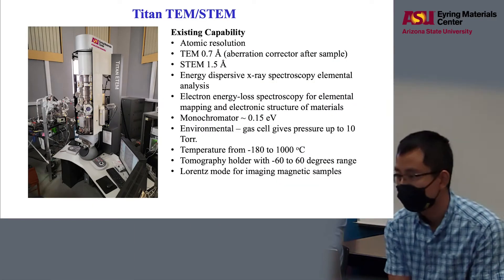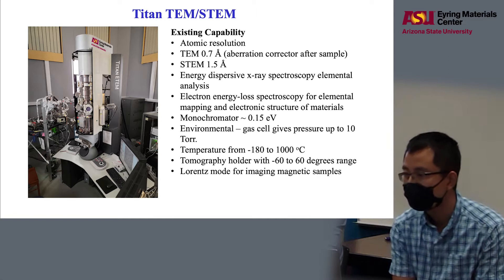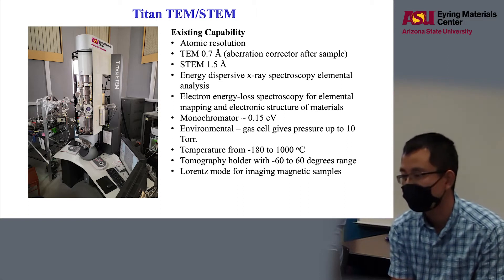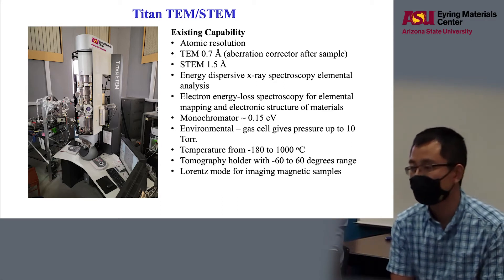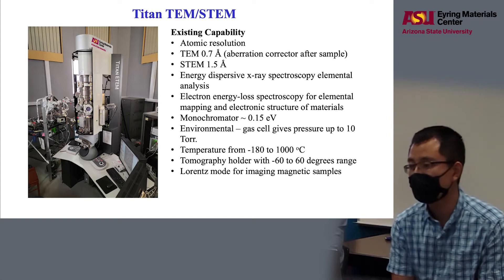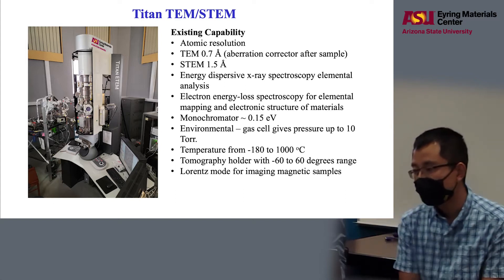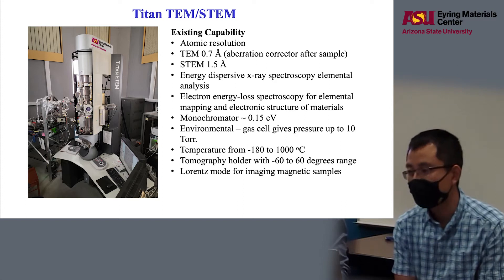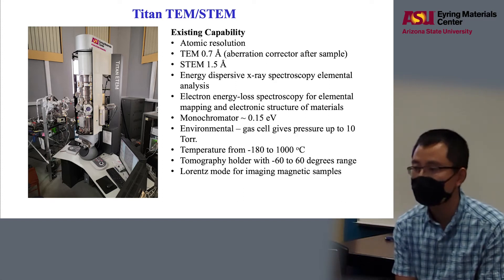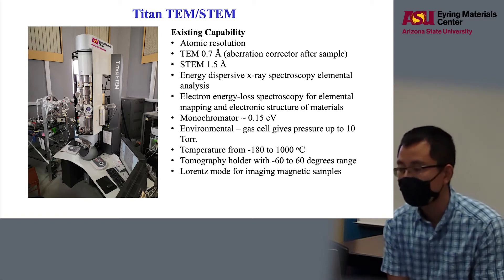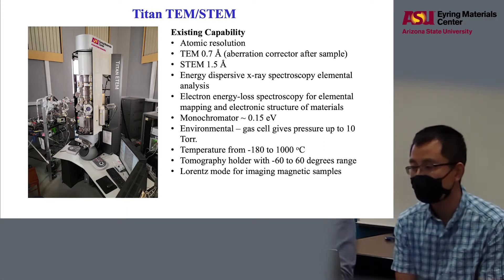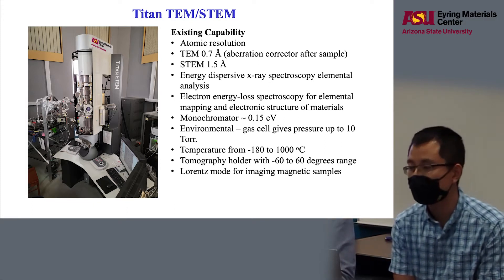First, I want to quickly review the existing capabilities. This microscope provides atomic resolution. For TEM mode, it provides 0.7 angstrom spatial or information limit, and for STEM, it provides about 1.5 angstrom. It has an energy dispersive X-ray spectrometer for elemental analysis. And with the new EELS detector and spectrometer, we can also do fast mapping using EELS. This microscope also has a monochromator, which can provide energy resolution down to 0.15 eV.